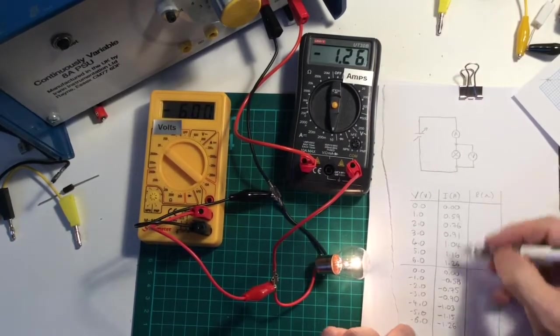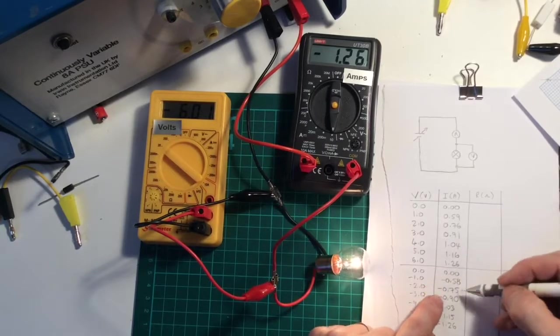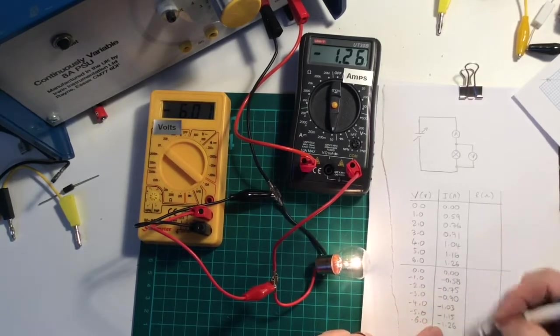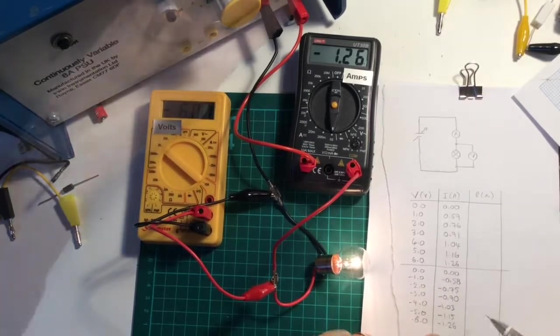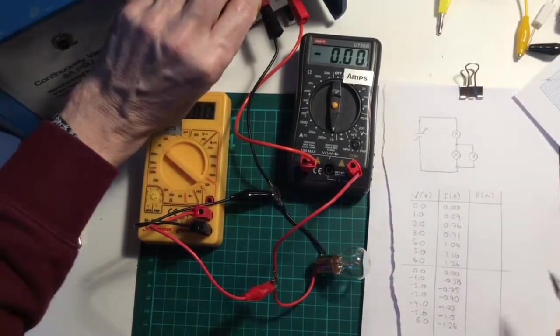You notice actually the numbers for each voltage are pretty much the same each time around. They're within one decimal place, one decimal point. Okay, so let's do my calculation of resistance again.